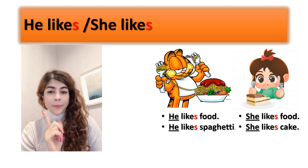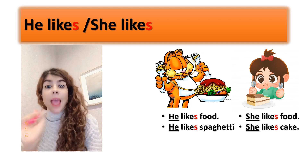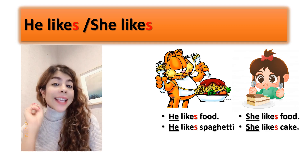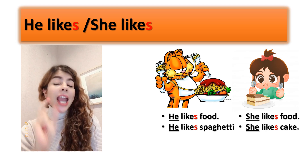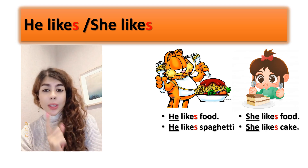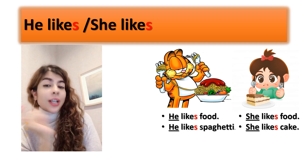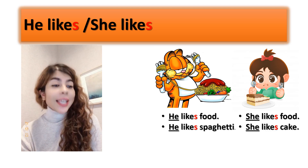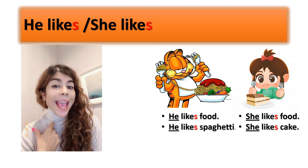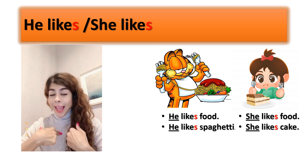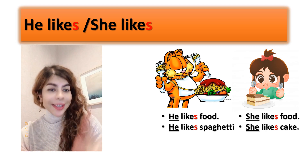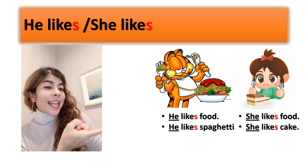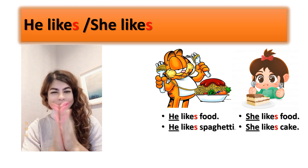Remember, when you want to talk about a boy, you say he likes cake, he likes food. When you want to talk about a girl, you should say she. She likes food. She likes cake. I like cake. You like cake. He likes spaghetti. She likes cake. Okay? Good job. Bye-bye.